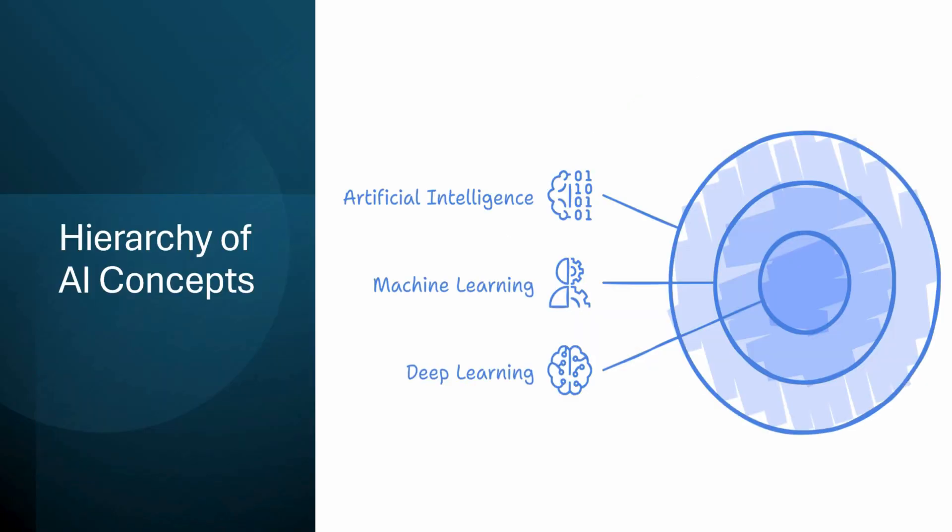Let's start. We will first look at the hierarchy of AI concepts. Artificial intelligence represents the broadest concept, covering any technique that enables machines to mimic human intelligence. Within this vast field, machine learning emerges as a subset, focusing on algorithms that allow systems to learn and improve from experience without explicit programming.